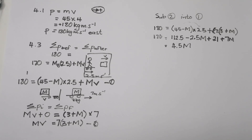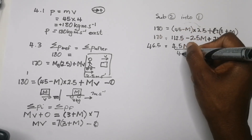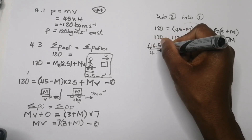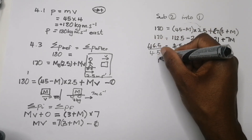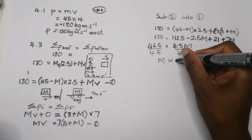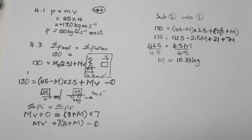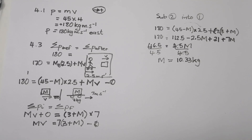Continuing: 180 − 112.5 − 21 = 46.5. So 4.5m = 46.5. Dividing both sides by 4.5 gives m = 10.33 kilograms. Please verify that and see if you get the same answer. The mass of the parcel is 10.33 kg.